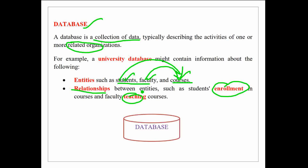So the relationship between students and courses is enrollment, and the relationship between faculty and courses is teaching. These relationships can be stored in the database in addition to the entities. As shown in this figure, databases are usually represented in a cylindrical shape.